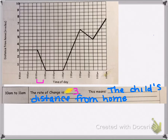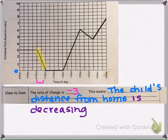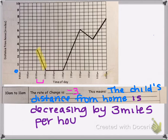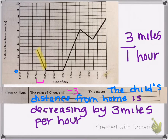Now we need to explain what this negative represents. The negative represents that since the distance from home is going down, and the origin is at zero, the distance from home is getting smaller. That means the child is getting closer to home — the child's distance from home is decreasing by 3 miles per hour. The rate of change is miles over hours, which is how we know it's 3 miles per hour.